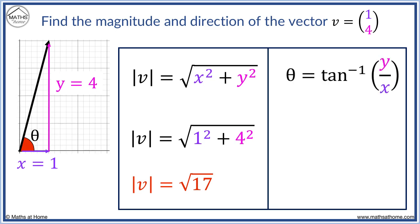Now, the angle theta is found by substituting y equals 4 and x equals 1 to obtain arc tan of 4 over 1. Evaluating this on a calculator, theta equals 76.0 degrees. This is the direction of the vector as it is the angle from the positive x-axis.